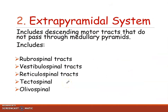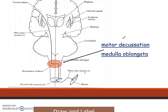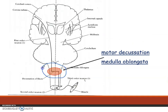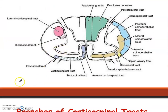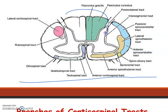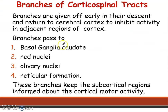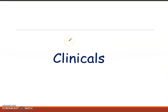These are the extrapyramidal tracts, and they are extrapyramidal because they do not pass through the medullary pyramids. Here medical decussation is taking place. There is the cerebral cortex, corona radiata, thalamus, internal capsule, caudate nucleus, cerebellum — these are all the tracks of the ascending and descending systems shown here.